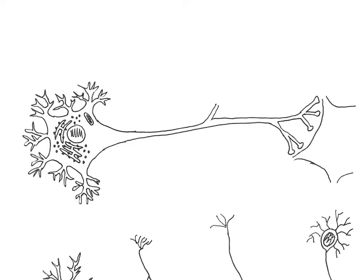The neuron contains a cell body with a nucleus and organelles, but no centrioles — meaning no mitosis can take place and neurons cannot divide. If a neuron is destroyed, it cannot be replaced. Some neural stem cells persist in adults, but are inactive except in the olfactory receptors in the nose and in the hippocampus, where memory storage occurs. In the cell body, clusters of rough endoplasmic reticulum and ribosomes called Nissl bodies give the cell body its gray color. The cytoplasm surrounding the nucleus is called the perikaryon.